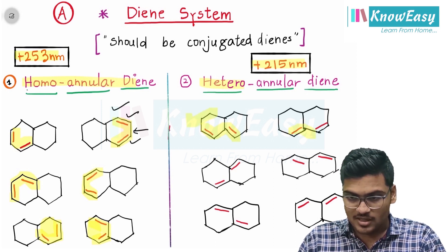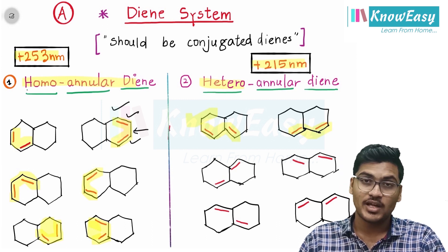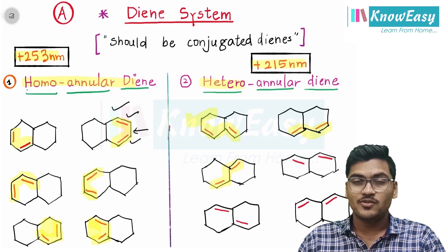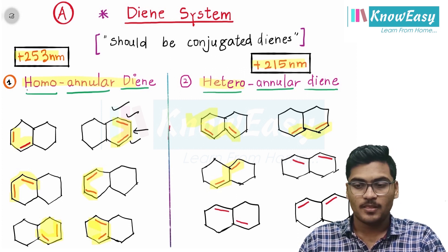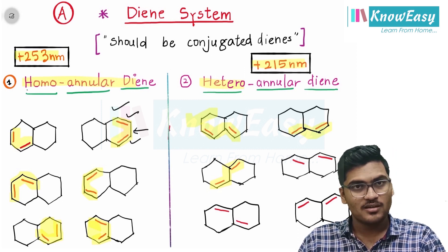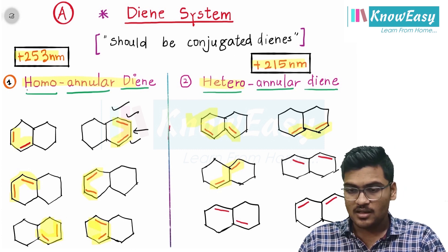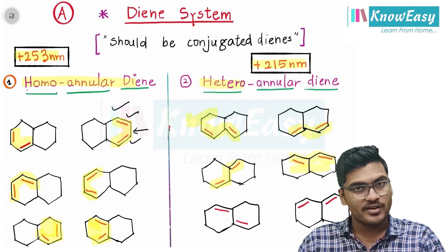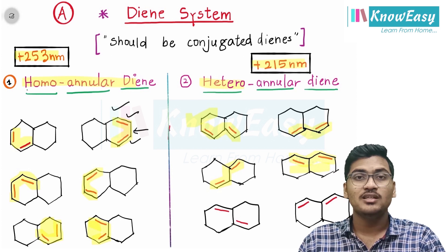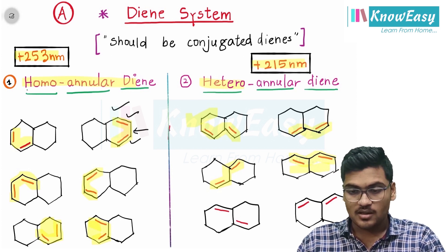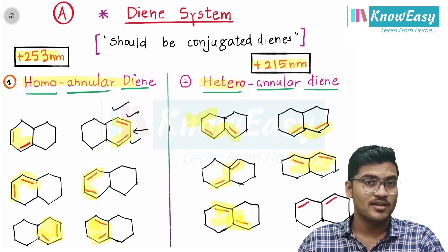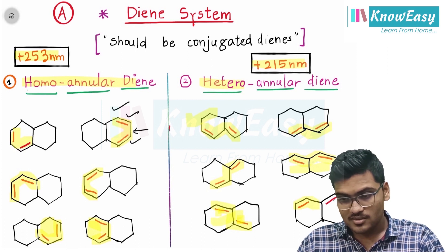Here also double bond, single bond, double bond — this is a heteroannular diene. Double bond, single bond, double bond — this will be a heteroannular diene. Don't be confused here, it is very simple: double bond, single bond, double bond in two different rings — so it is a heteroannular system. Double bond, single bond, double bond are in conjugation and in different rings — so it is a heteroannular system.